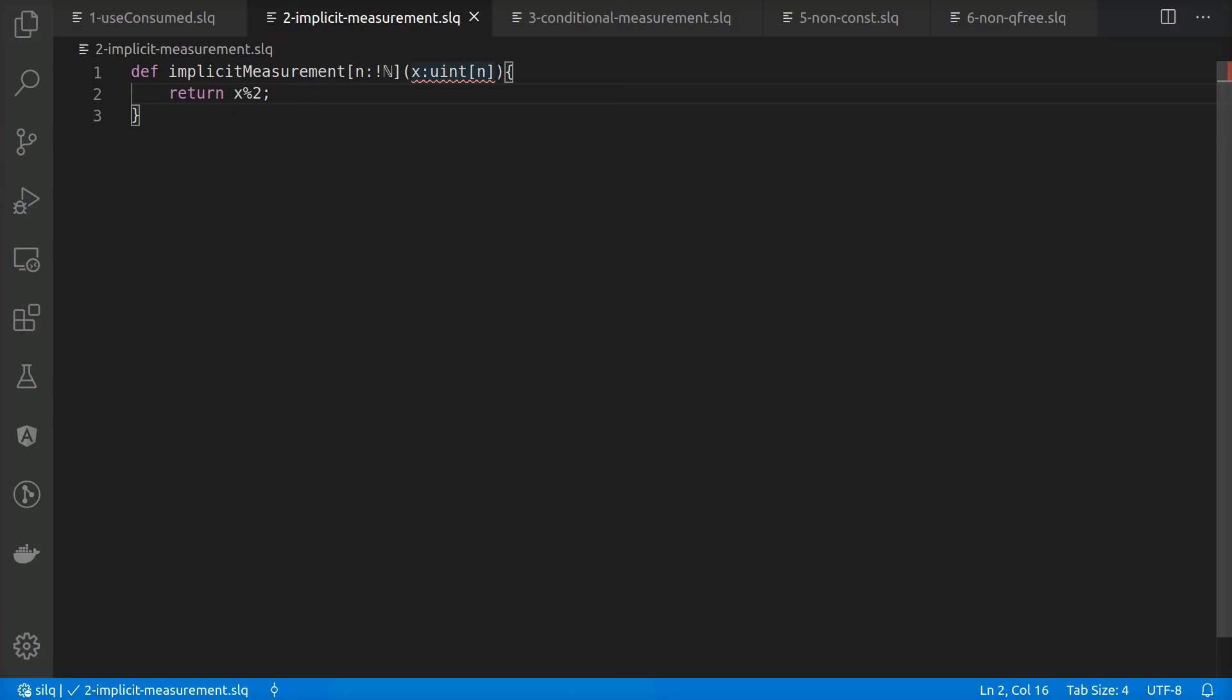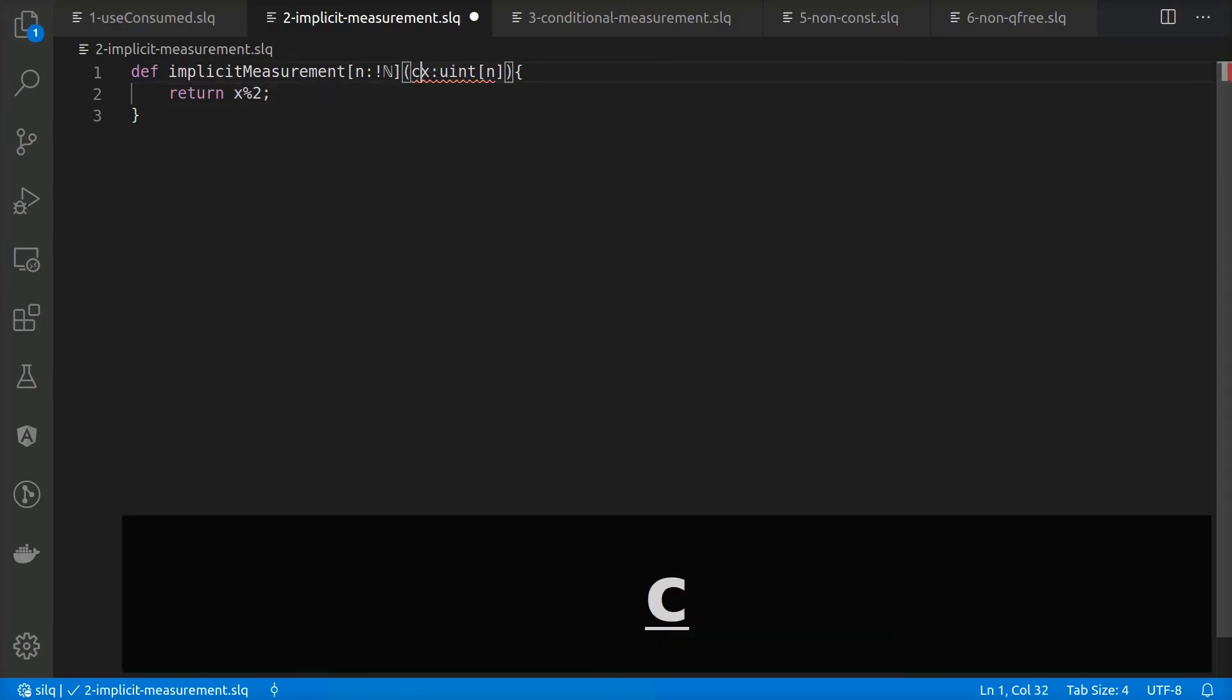This next function has a parameter x and returns x modulo 2. Note that x is not consumed in the function body, but is also not marked as const in the function signature. Therefore, any caller of this function would expect x to be consumed. Because this is not the case, our type system reports an error here. However, we can easily fix this error by explicitly stating that x is const and therefore should be preserved.